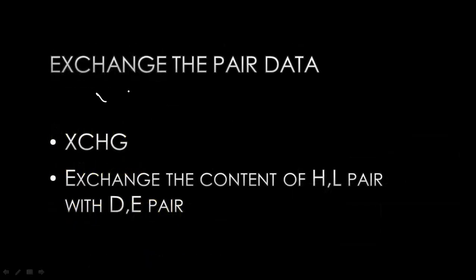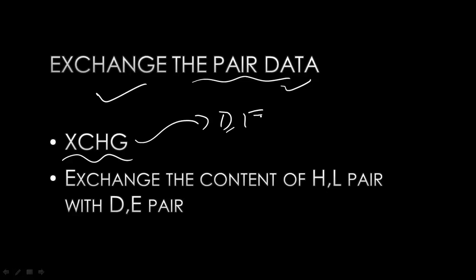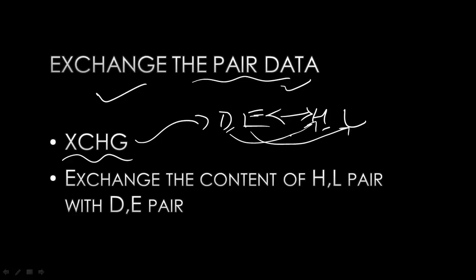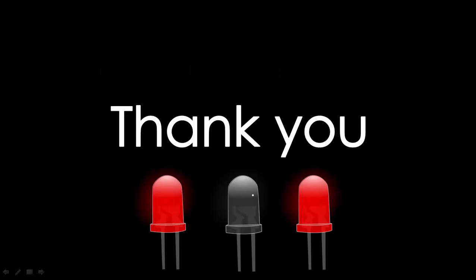The last instruction is XCHG (Exchange), which has no operand. It directly works with the DE and HL pairs, exchanging their contents: D is transferred to H, E is transferred to L, and vice versa. This is the last data transfer instruction covered. Thank you for watching — please subscribe, share, and comment if you have questions.